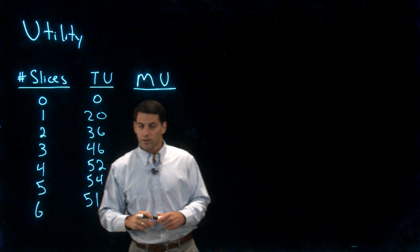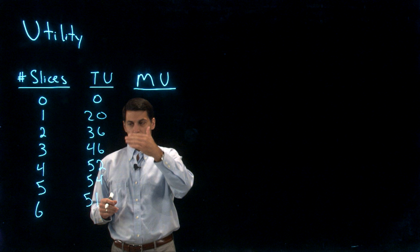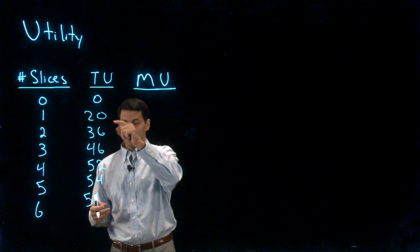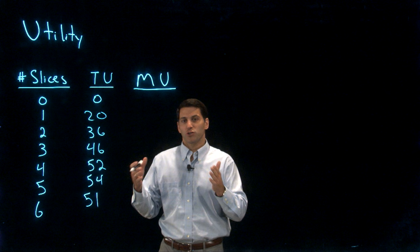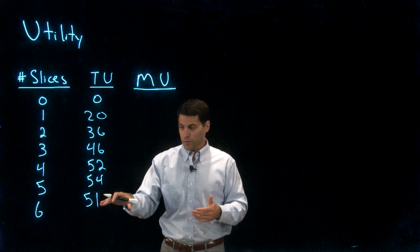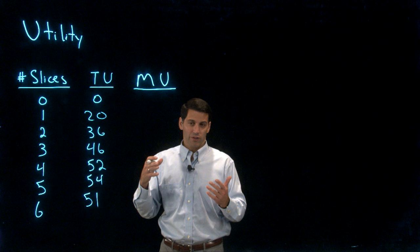A couple of important things to note here. When we're talking about utility, we say that it is ordinal — larger numbers are better. A utility of 36 is definitely better than a utility of 20. But the one thing we cannot say is how much better — we don't say that a utility of 40 is twice as good as a utility of 20. Higher numbers represent greater utility, but twice as large a number doesn't necessarily reflect well-being that's twice as good.